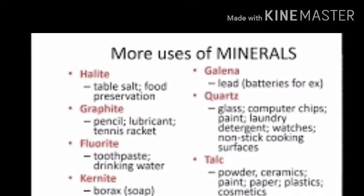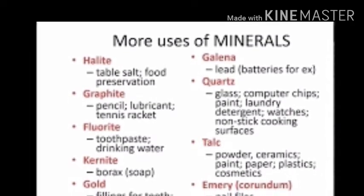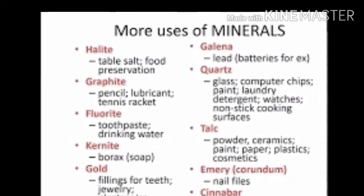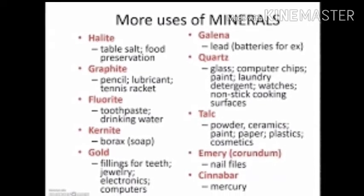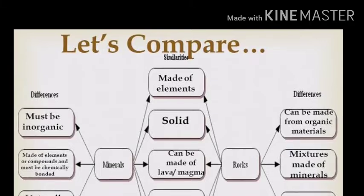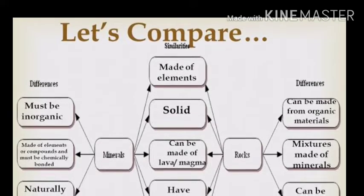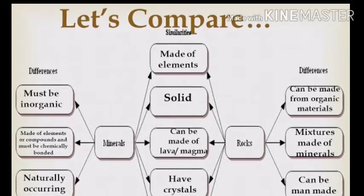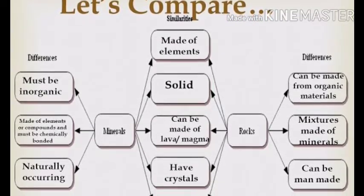Some other uses of minerals include table salt, food preservatives, pencils, lubricants, tennis rackets, toothpaste, drinking water filters, soap, tooth fillings, jewelry, electronic computers, lead, glass, paint, detergent, non-stick cooking surfaces, powder, ceramics, paints, paper, plastic, and cosmetics. Now let's compare rocks and minerals. Minerals must be inorganic, while rocks can be made from organic materials. Minerals are made of elements or compounds that are chemically bonded, whereas rocks are mixtures made of minerals.